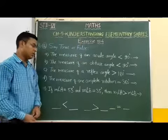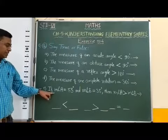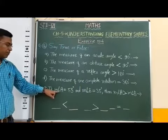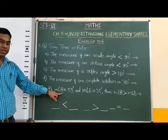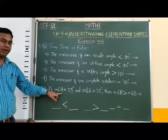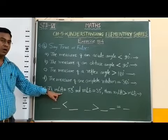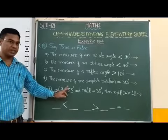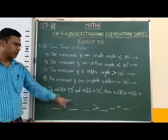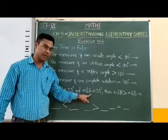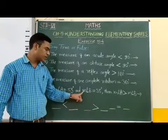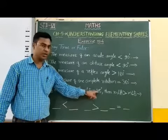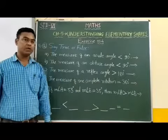Now, in the last statement, M∠A means the measure of angle A, which is equal to 53 degrees. And M∠B means the measure of angle B, which is equal to 35 degrees.